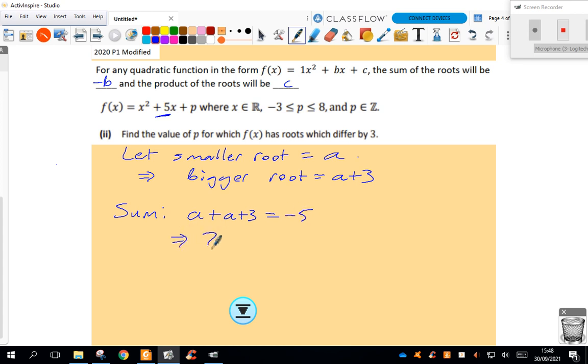So I'm getting 2a plus 3 equals negative 5. Solving, 2a will be negative 8, so a equals negative 4.